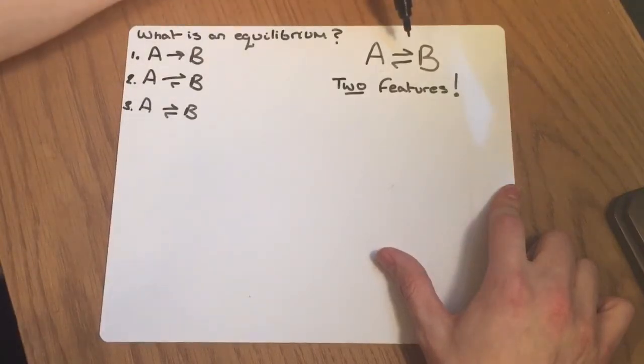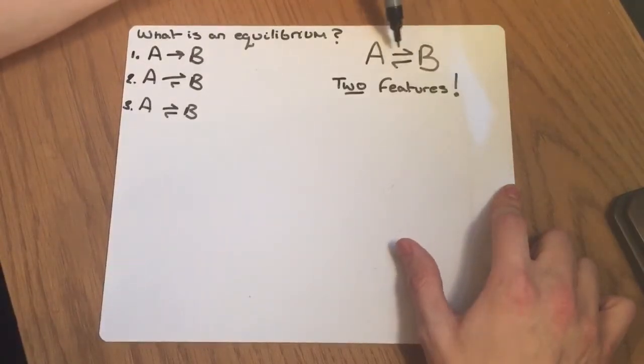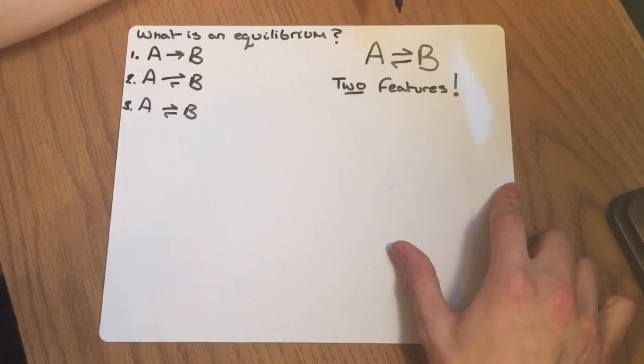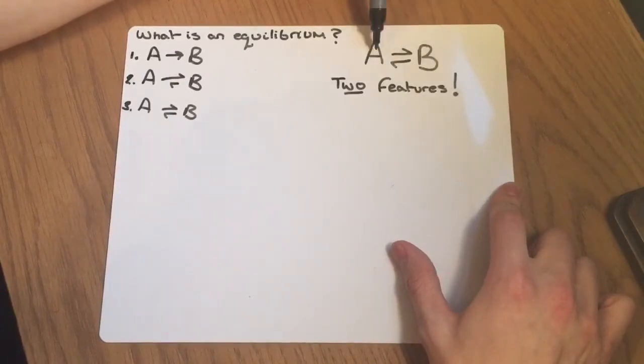Now, the two main features, I've already alluded to one of them, of an equilibrium, are that the rates of the forward A to B and the backwards B to A reactions are equal, and as a result of those rates being equal, the concentrations of A and B remain constant, although the concentrations of A and B may or may not be the same as each other. They're actually much more likely to not be the same as each other. So, whilst they may not be the same, they are kept at the same levels, and therefore they're described as constant.